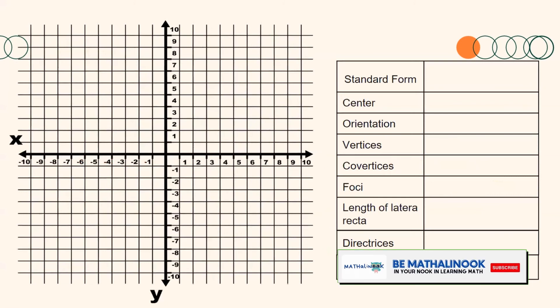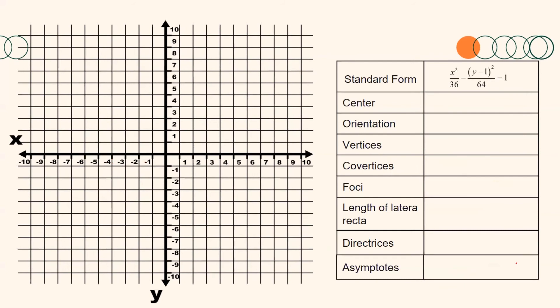From our solution, the standard form is x²/36 − (y − 1)²/64 = 1, with center (0, 1), horizontal orientation, and a = 6, b = 8, c = 10. Since the hyperbola is horizontal, the vertices are to the right and left of the center, 6 units away, giving vertices at (6, 1) and (−6, 1). The co-vertices are above and below the center, 8 units away, at (0, 9) and (0, −7).